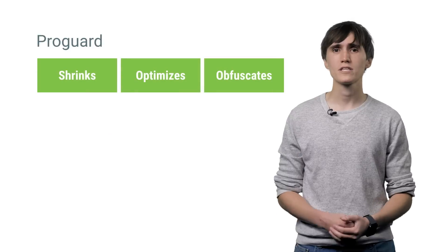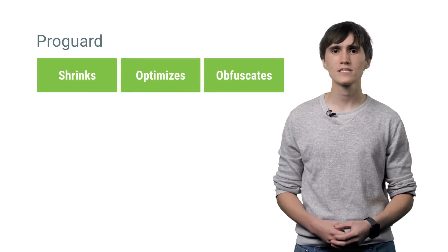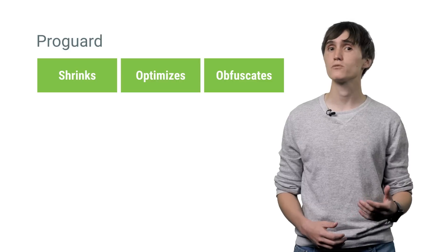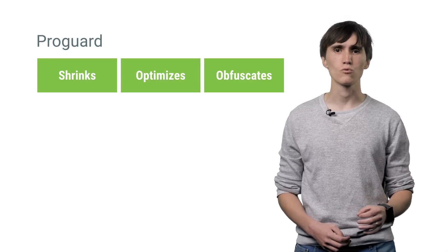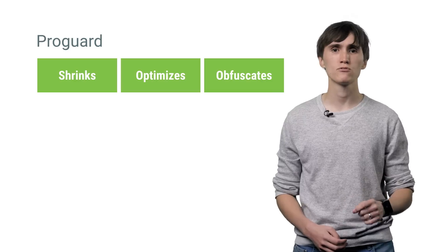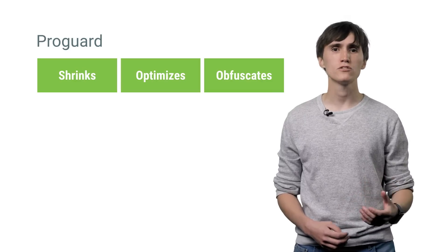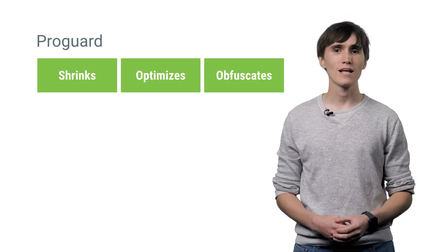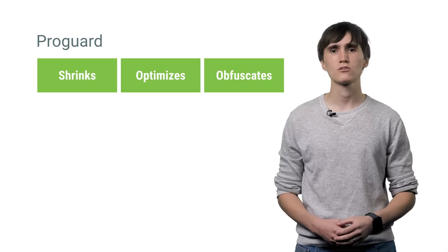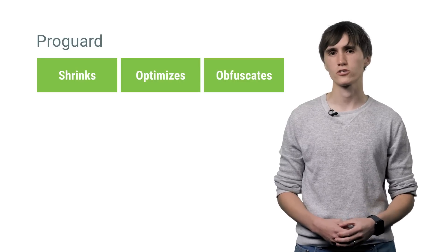Fortunately, there's a tool in the Android tool chain that's great for hunting down unused code and stripping it from your build. ProGuard is a tool that shrinks, optimizes, and obfuscates your code by removing the unused parts. It also renames classes, fields, and methods with semantically obscure names to make it harder to reverse engineer your code.